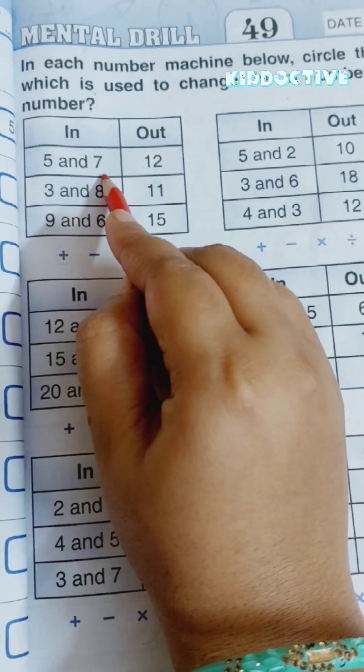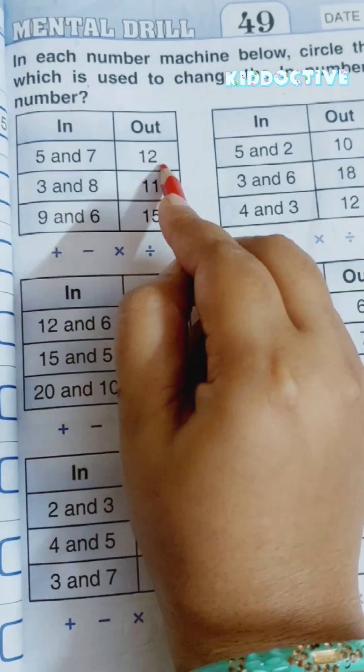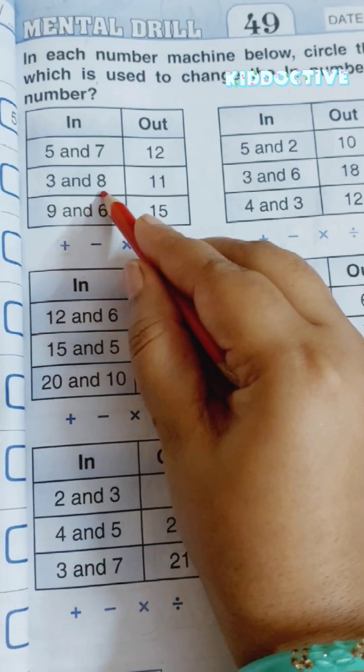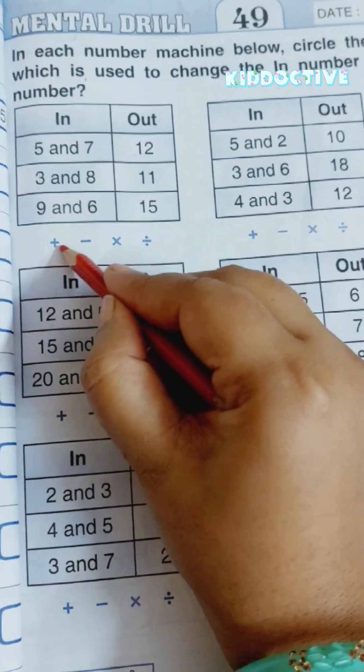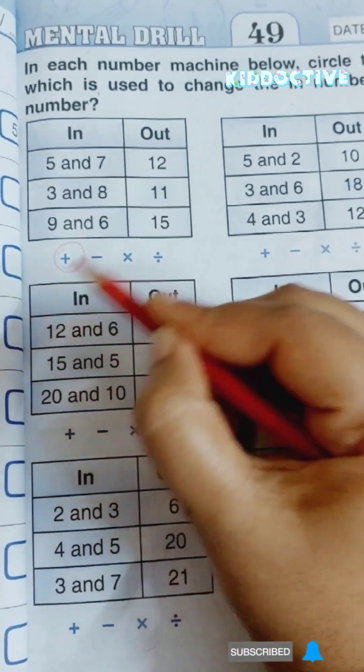So 5 plus 7, 5 and 7, 12, yes. 3 and 8, 11, yes. 9 and 6, 15, yes. So the operation is plus.